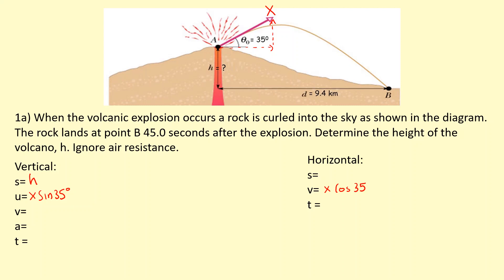The vertical velocity when it hits the ground, we're not interested in yet. The acceleration due to gravity is minus 9.81 and the time is 45 seconds. The horizontal distance traveled is 9.4 km, so 9400 meters in 45 seconds. We should be able to solve the horizontal part because it has only one unknown.